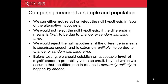Before we do any testing, we need to set a level of significance, which is a probability. The value of this probability is really small. If the chance of having a difference in the means is smaller than the level of significance, it is very unlikely to have the difference due to chance. Under this situation, we will reject the null hypothesis. Otherwise, we would not reject the null hypothesis.